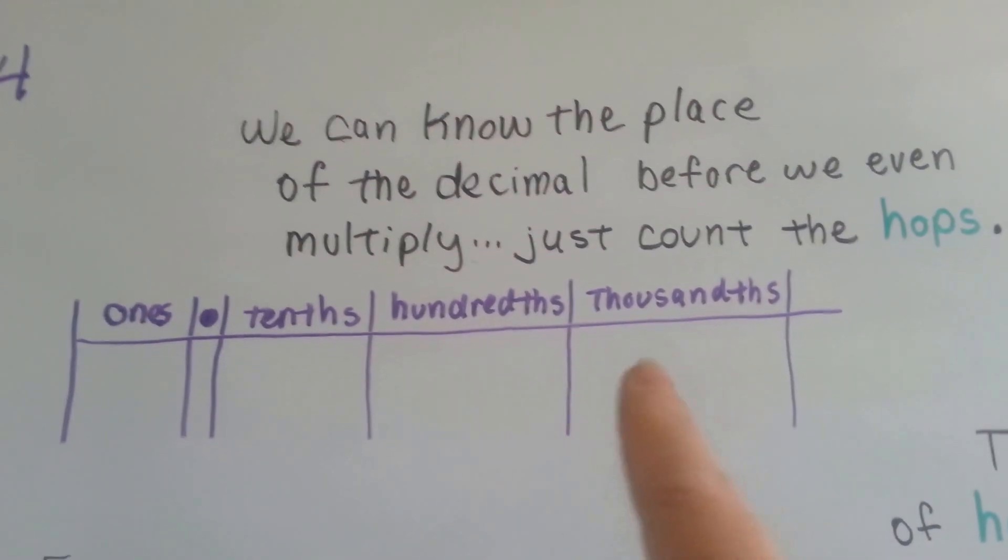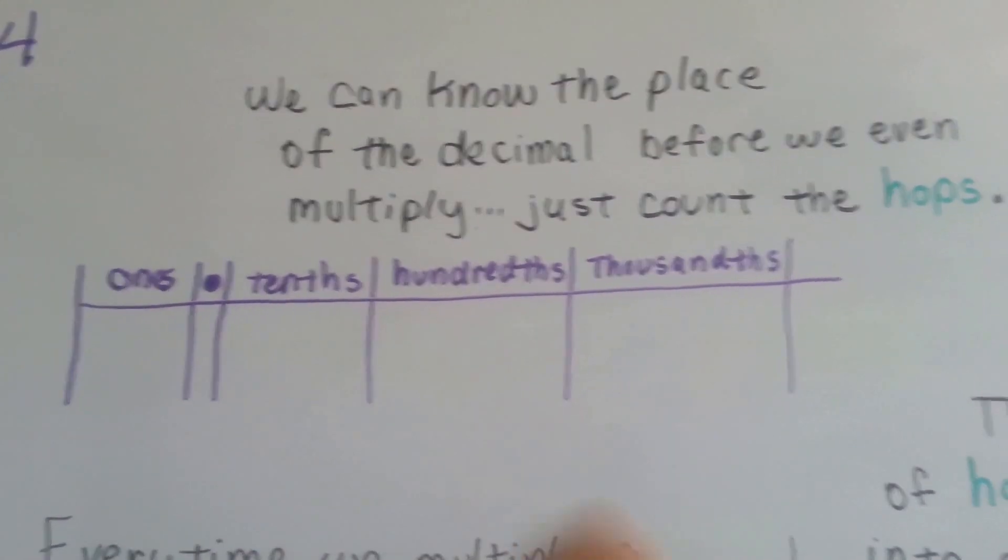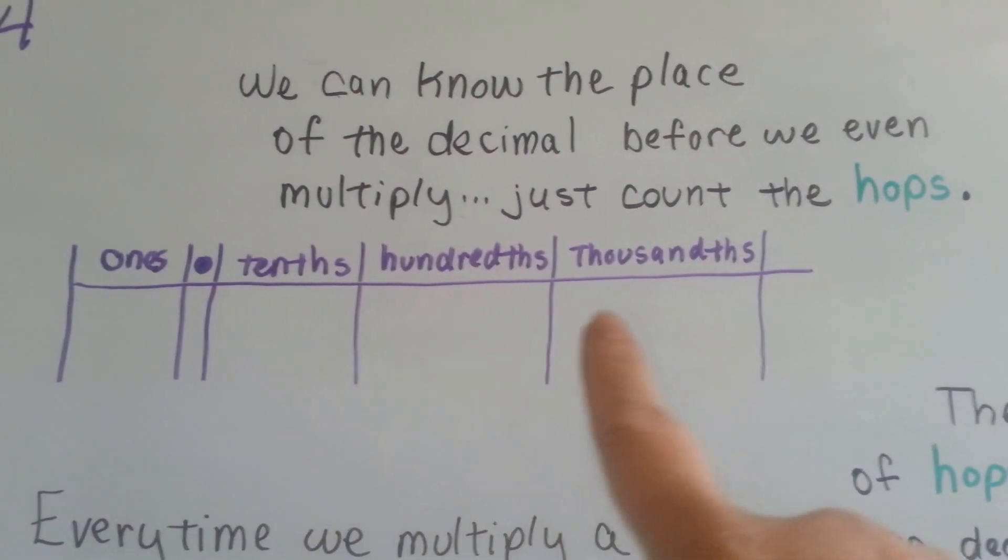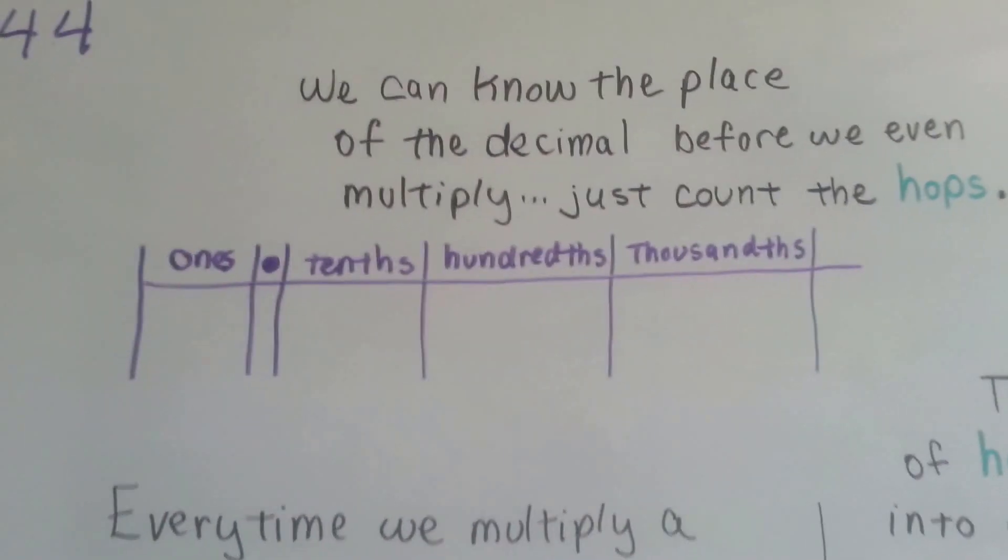This is our place value. Here's ones, tenths, hundredths, thousandths. Keep in mind that we move farther to the right as we get into the decimal points, place values.